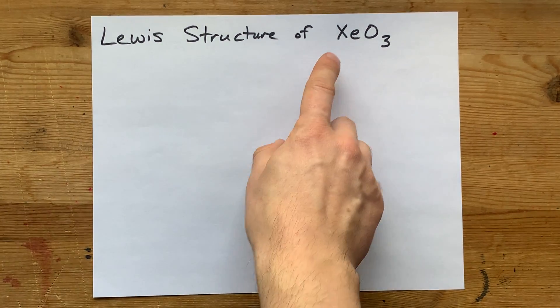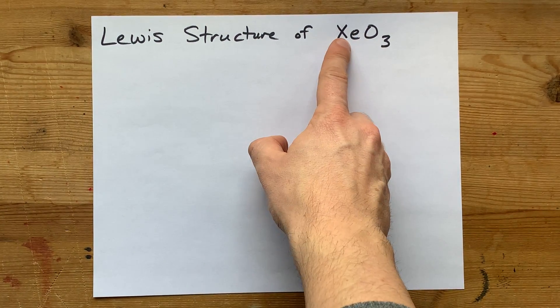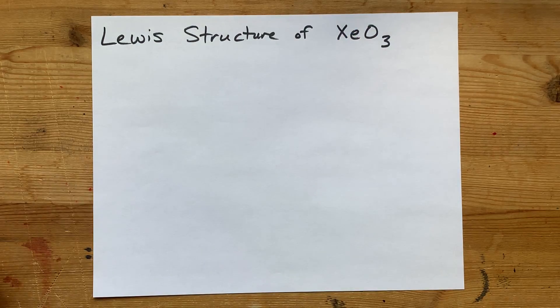How do you draw the Lewis structure for XeO3, xenon trioxide?